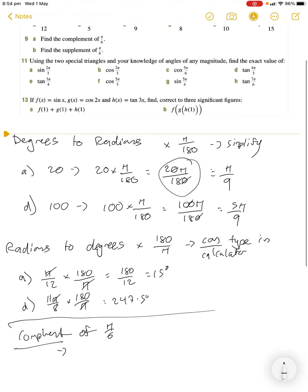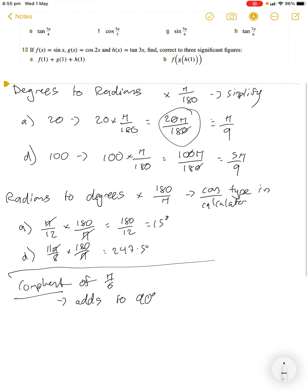Now complement in terms of angles means it adds to 90 degrees. So two angles that add to 90 degrees, the complement will be the other angle we need in order to add the current one to become 90 degrees.